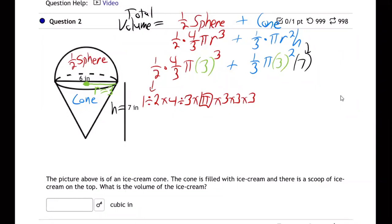I'm getting 56.54866 plus, and then this, same kind of thing, one divided by three times the pi button times three times three times seven, right?